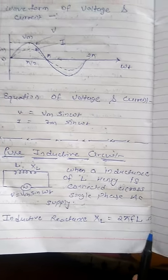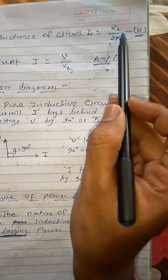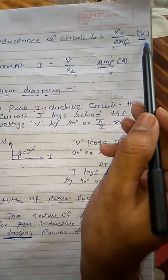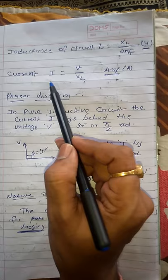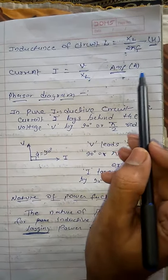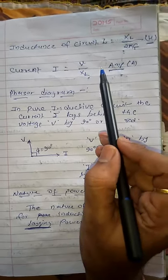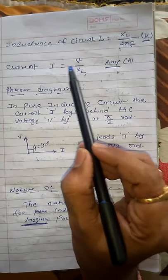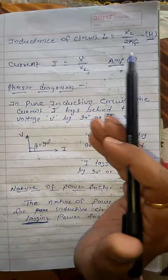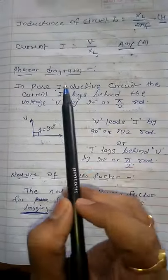The unit of inductance is Henry (H). If you need to find inductance, L is equal to XL divided by 2πF. Current I, if you need to find it, is equal to V divided by XL, and its unit is ampere. Any other quantity can be found by rearranging or shuffling the respective formulas to find that particular quantity.